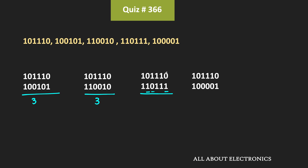For the first and fourth code words, the Hamming distance is equal to 3. Likewise, if we compare the first code with the last code, the Hamming distance is equal to 4 because these two code words differ at 4 bit positions.